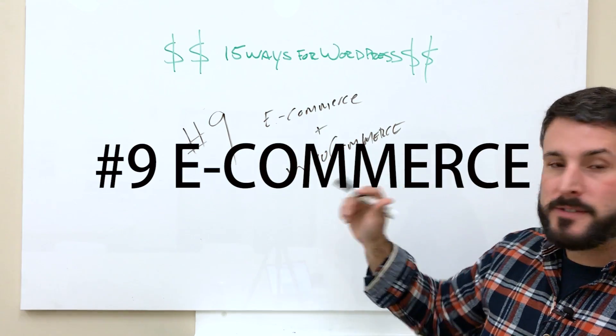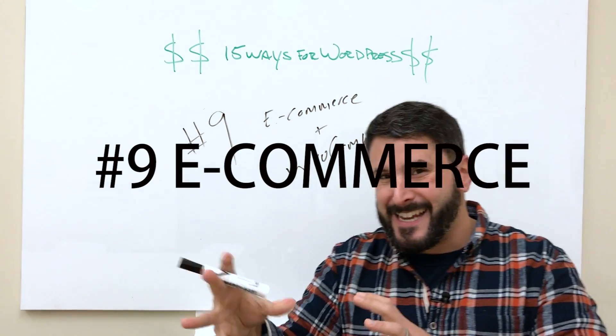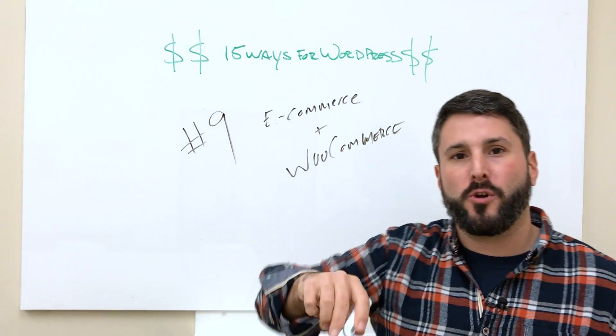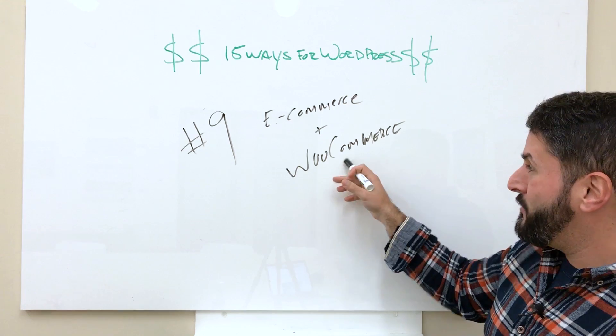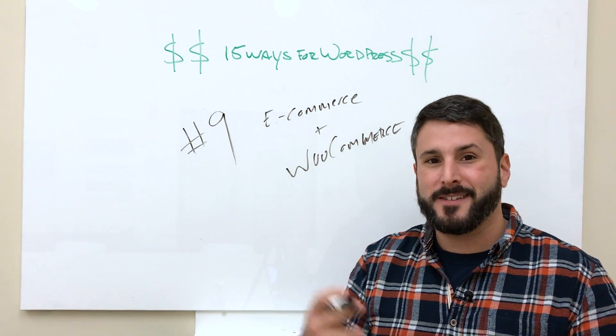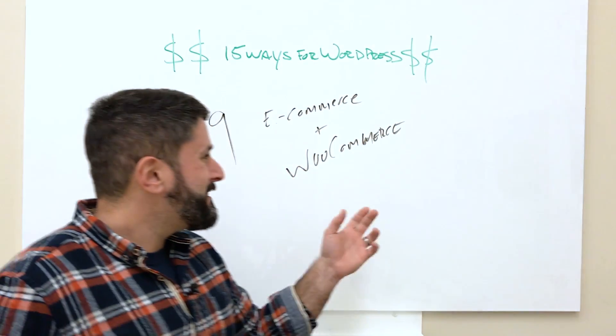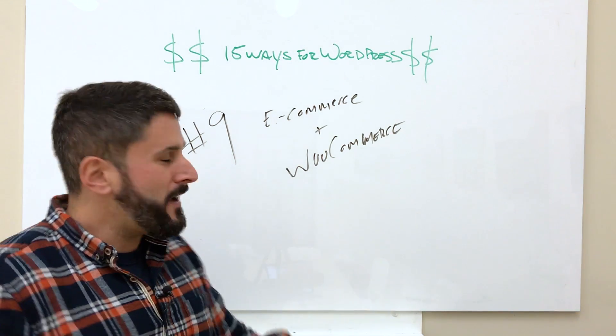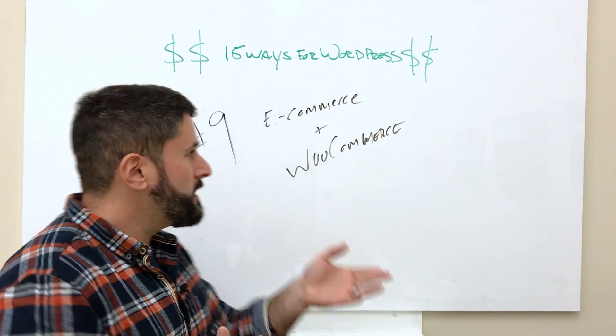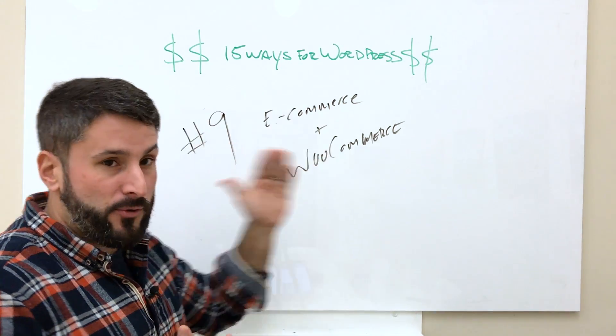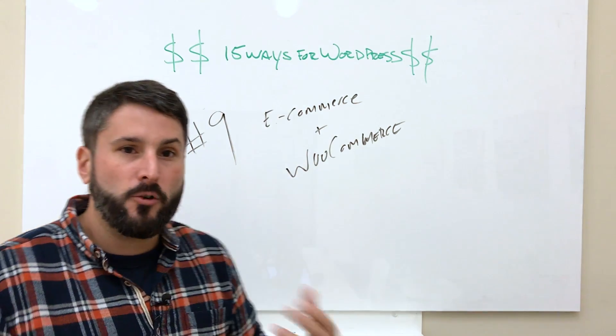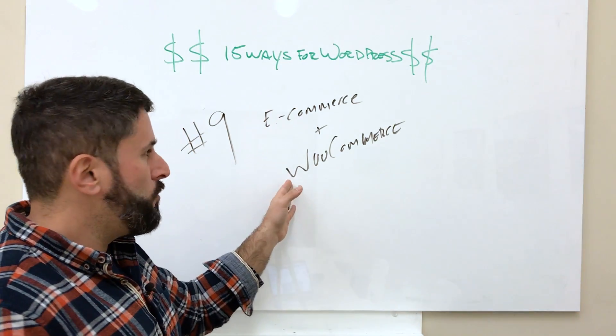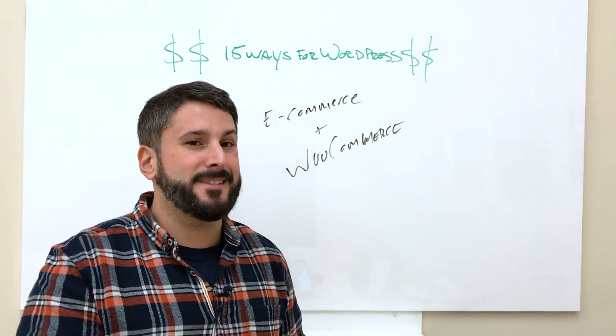Number nine is going to be e-commerce and WooCommerce. There's a huge opportunity in getting people onto WordPress as an e-commerce platform. And then there is a huge opportunity in the WooCommerce space as well. WooCommerce now owned by Automatic. There is a tremendous opportunity in that training, education, all of that stuff. And then building e-commerce solutions using any other e-commerce plugin that you might find or something like WooCommerce.